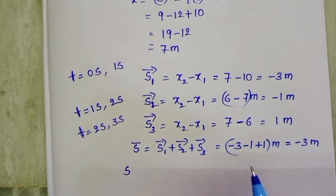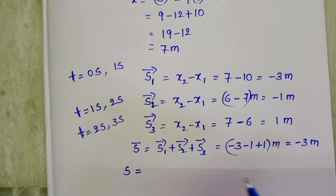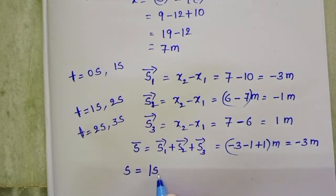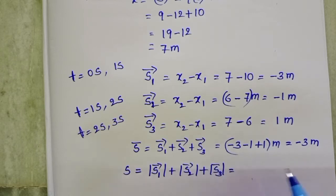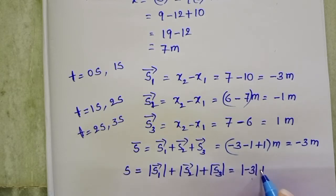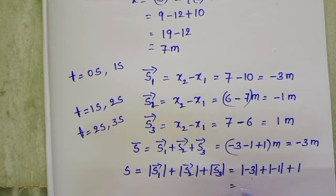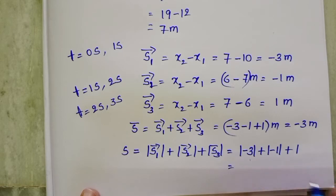Distance does not depend upon direction — it is the length of the path covered by the particle. Distance = |S1| + |S2| + |S3| = |−3| + |−1| + |1| = 3 + 1 + 1 = 5 meters.